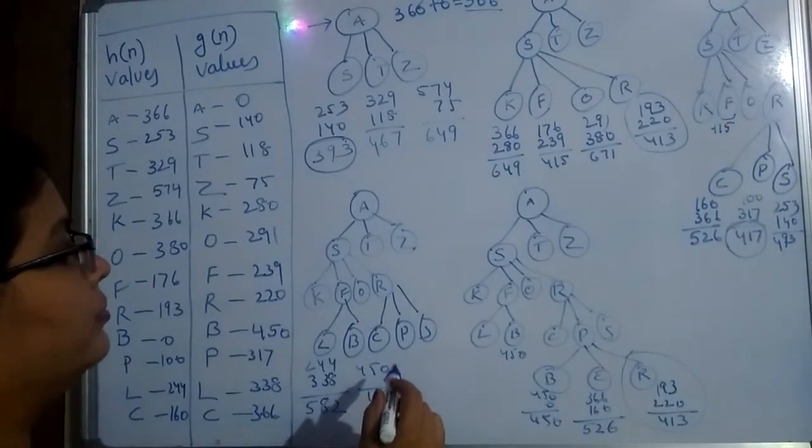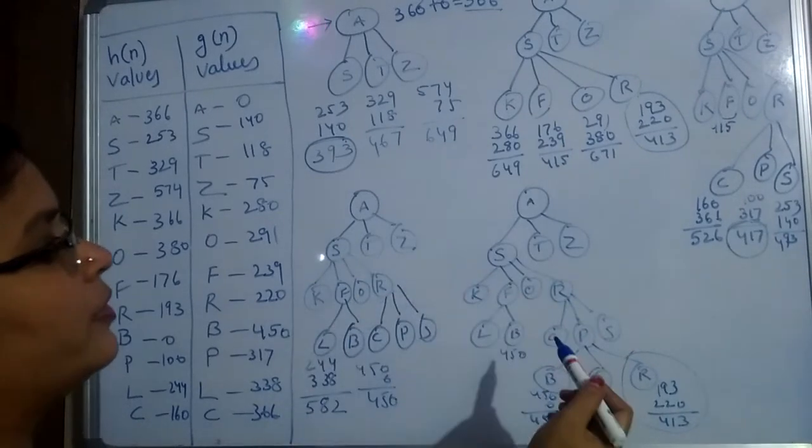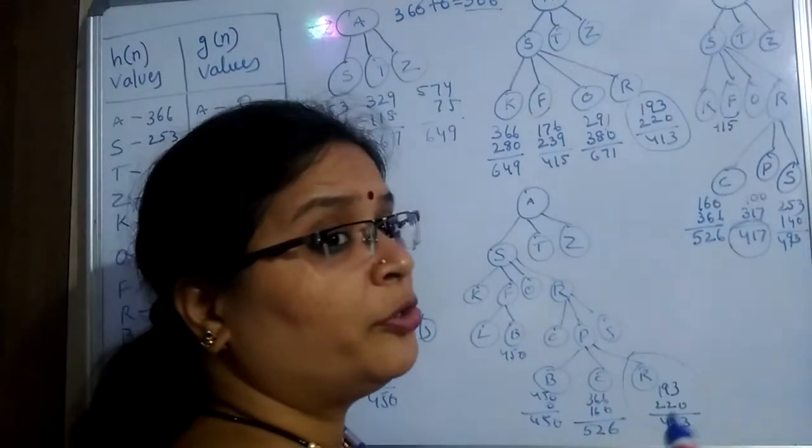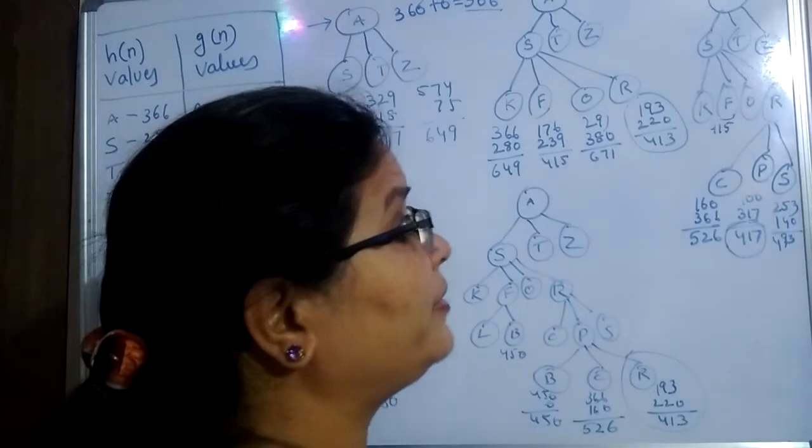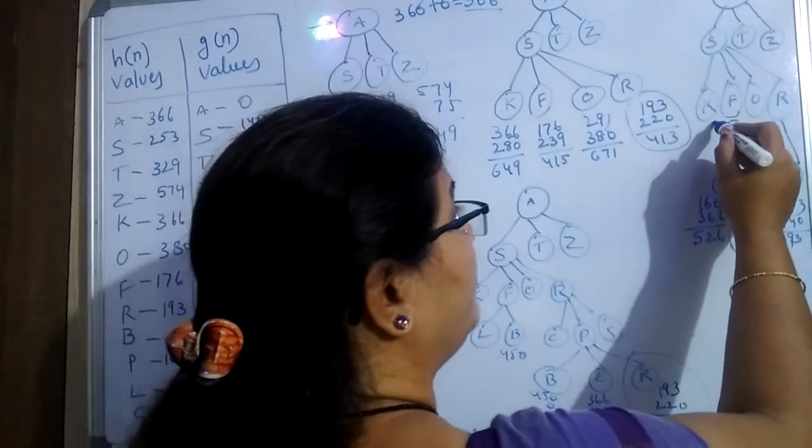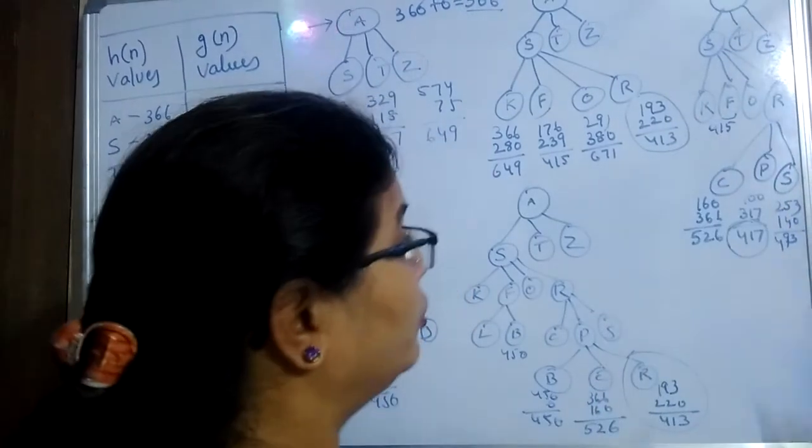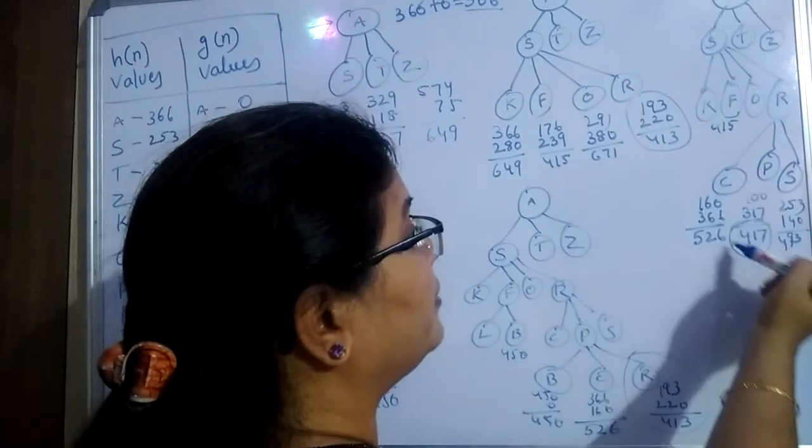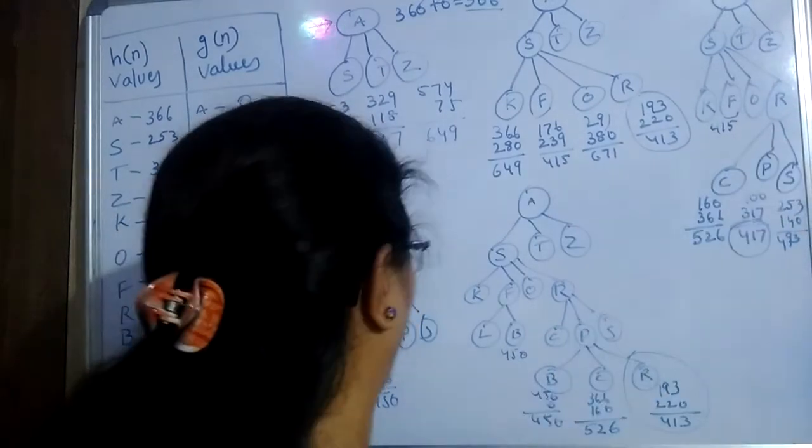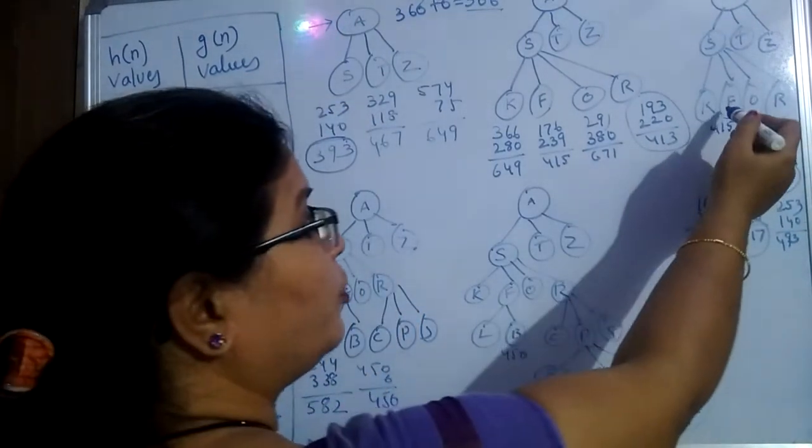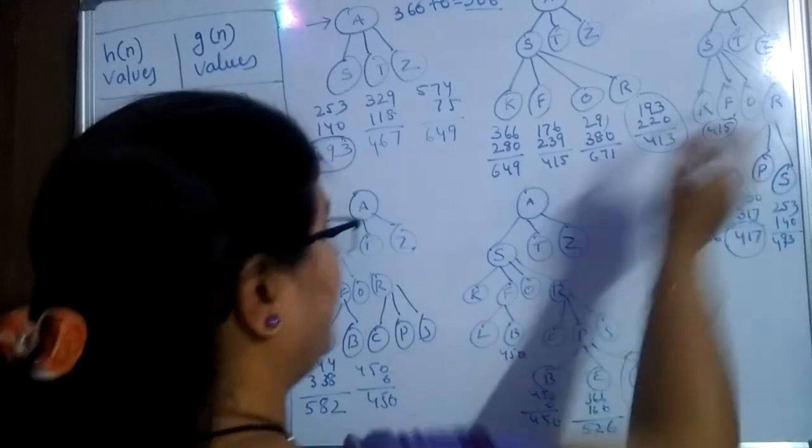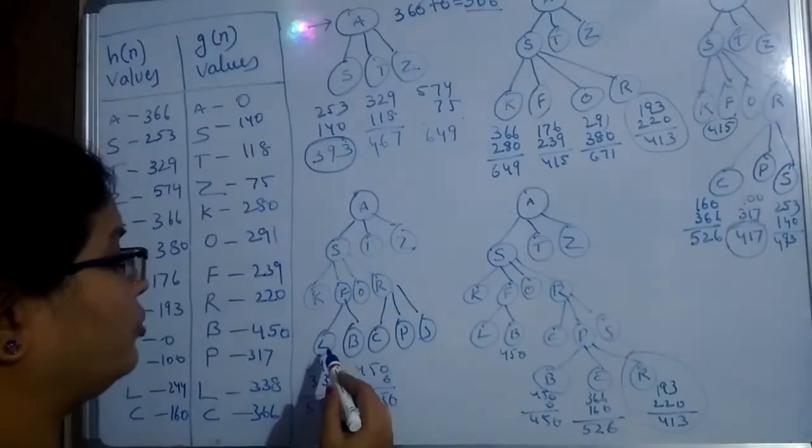A, S, 417. But it is the admissible heuristic technique. We have to check the previous levels also. If there are any minimum value other than the previous value is there. So in the previous level, very minimum value than this 417 is 415. So we have to expand this 415. I have expanded this F also here.